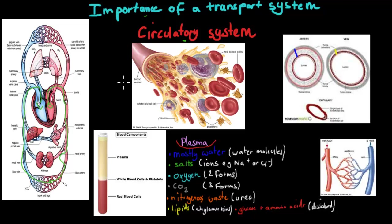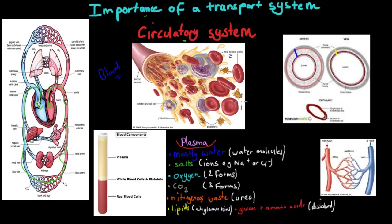So you need to know a bit about arteries, veins and capillaries, but you also need to know about what blood actually is. In blood we can find different types of components, for example red blood cells, which are often given to patients with anemia because red blood cells carry oxygen, and people with anemia don't have enough red blood cells, which means they get tired easily.